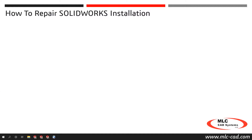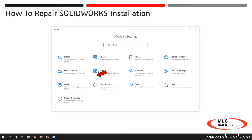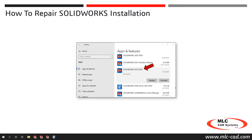For Windows 10 users, click the Windows Start icon, then Settings, Apps and Features, locate the SolidWorks application, and then click Modify to launch the SolidWorks Installation Manager.